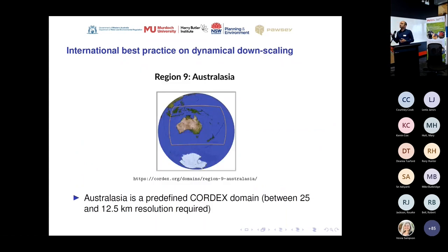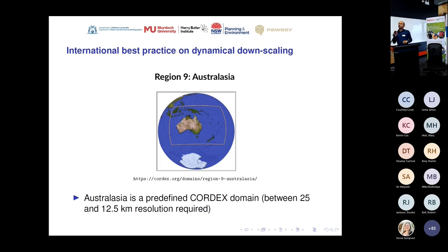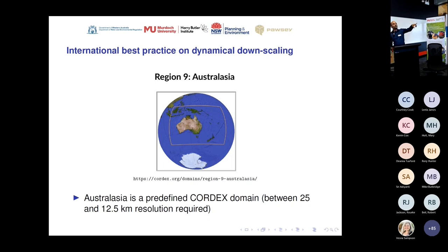One of the things that CORDEX does is define key regions of the globe. If any climate scientist is interested in doing regional projections for Australia, the CORDEX protocol says you need to cover this specific region — the box that covers Australia. This ensures that if two different universities or research organizations want to simulate Australian climate, they all use the same domain, so when they publish their results we can easily compare the two. Australasia is a defined CORDEX domain, and the resolution of that domain needs to be between 25 and 12.5 kilometres.